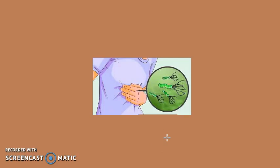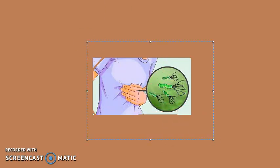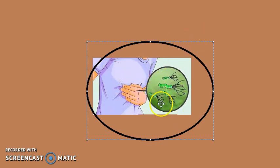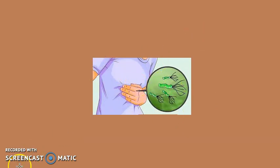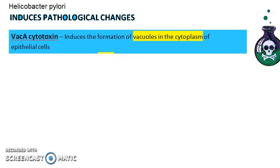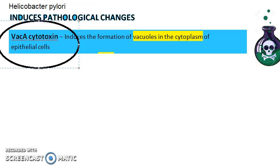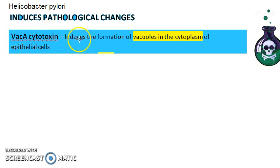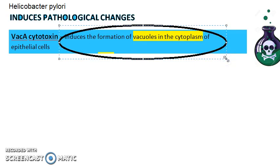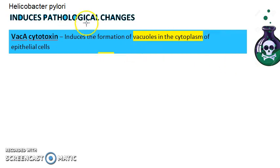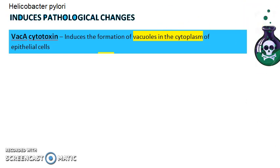In this video, let us look at the pathogenesis of Helicobacter pylori — how H. pylori is able to create all the problems in us. There are five points. The first is VacA cytotoxin. VacA stands for vacuoles in cytoplasm — this is a toxin that induces the formation of vacuoles in the cytoplasm of epithelial cells. This is the cytotoxin.